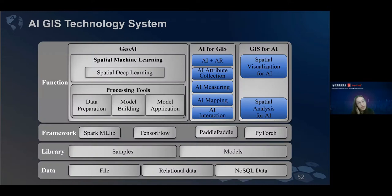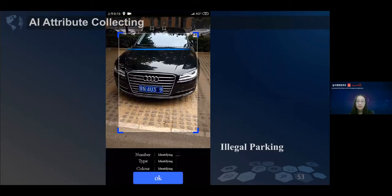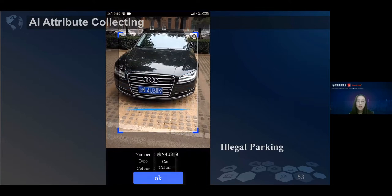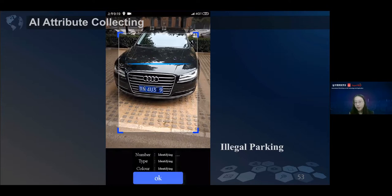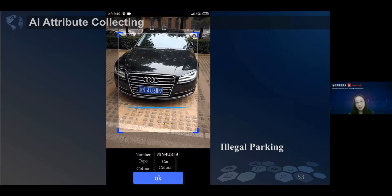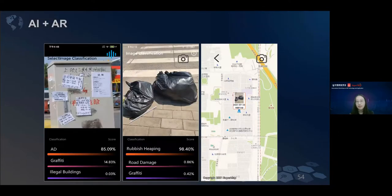Let's go back to this graph again, the AI GIS technology system. Finally, I will quickly go through and use some applications to see how AI GIS can be combined with some other techniques like AR or 3D techniques. If you have a phone, you can scan this car and get its plate. You will know the car plate number, the car color, and the car type. With some AR techniques, you can identify some uncivilized behavior and get their locations.